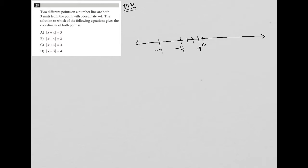All right. So I'm assuming that we have a point at negative one and a point at negative seven. The solution to which of the following equations gives the coordinates of both points.